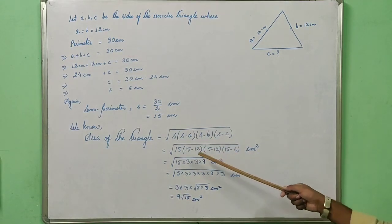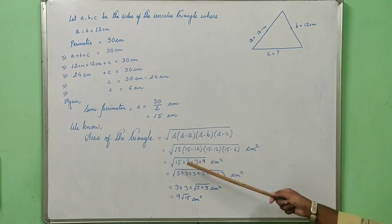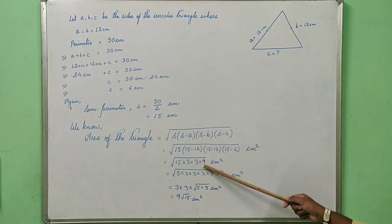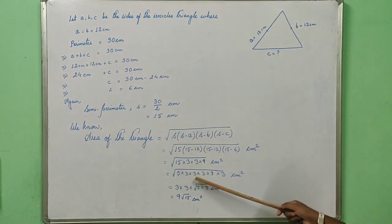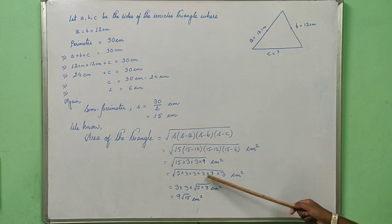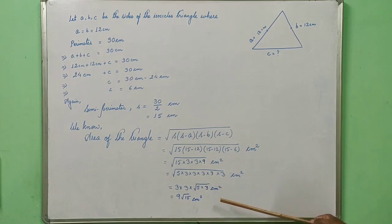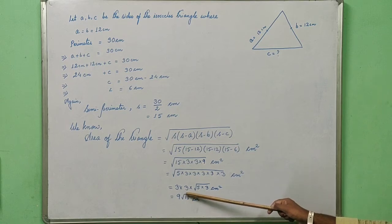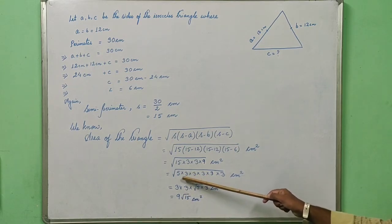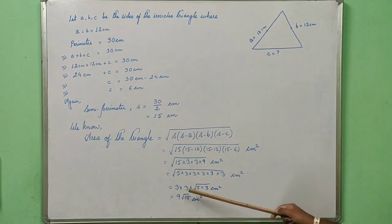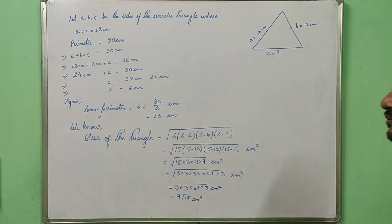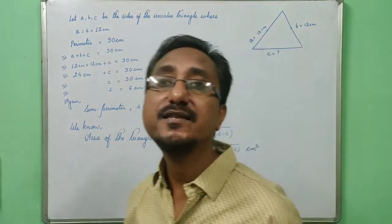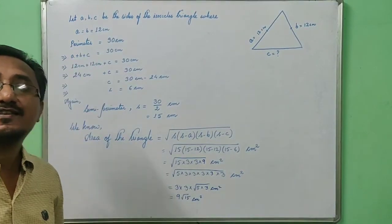Applying Heron's formula with S = 15, S−a = 3, S−b = 3, S−c = 9: Area = √(15 × 3 × 3 × 9). Prime factorization gives 5×3 × 3×3 × 3×3 × 3×3. Extracting pairs: two 3s come out giving 9, and √(5×3) = √15 remains. So the area is 9√15 cm².